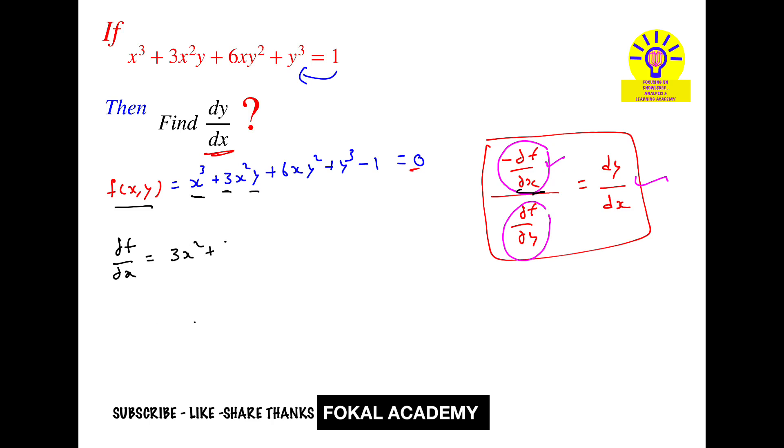It becomes 3x square plus here 3y is constant and derivative of x square is 2x, so 6xy. Here 6y square is constant, derivative is zero. So it becomes 3x square plus 6xy plus 6y square.